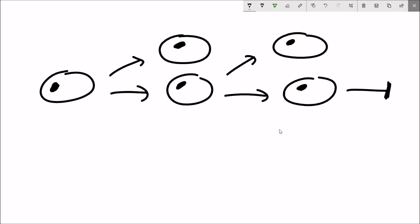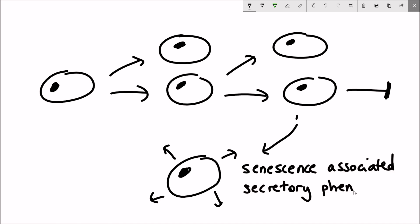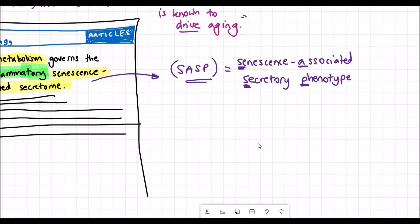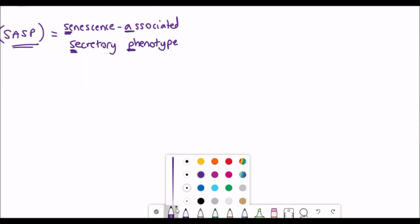Firstly, the senescence associated secretome is often referred to as the SASP - we'll come back to that in a little bit. But the bottom line is that this paper seems to suggest that if you increase NAD plus levels you increase inflammation, and then inflammation we know drives aging or it's one of the hallmarks of aging. This paper mainly focuses on cellular senescence which I talked about before in the hallmarks of aging, and it can be thought of as when cells stop dividing and instead you can see them secrete different molecules.